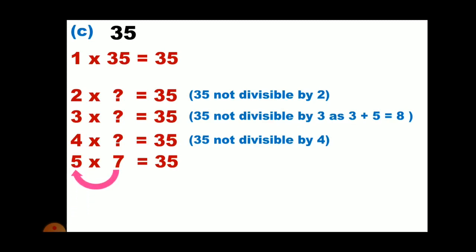The first one is 1, the next one is 5, then 7 and then 35. So the factors of 35 are 1, 5, 7 and 35.